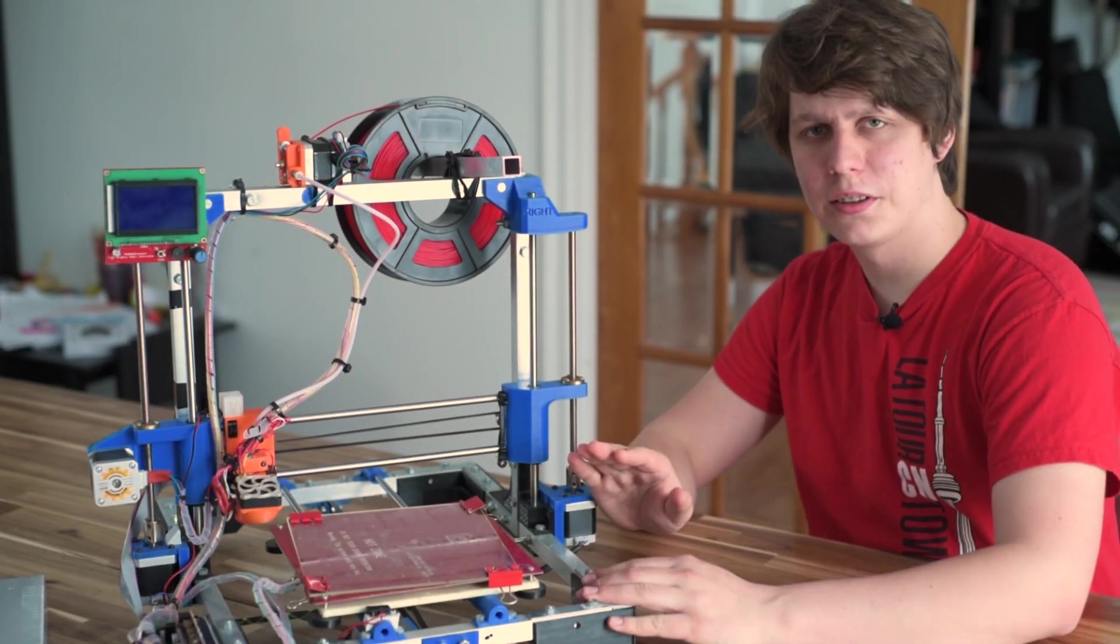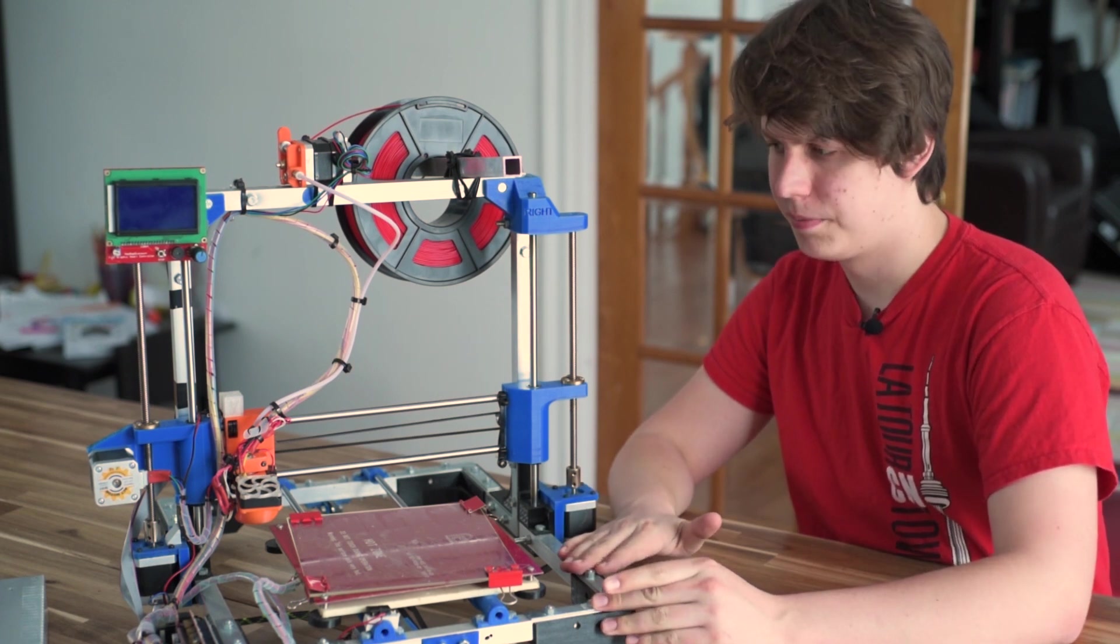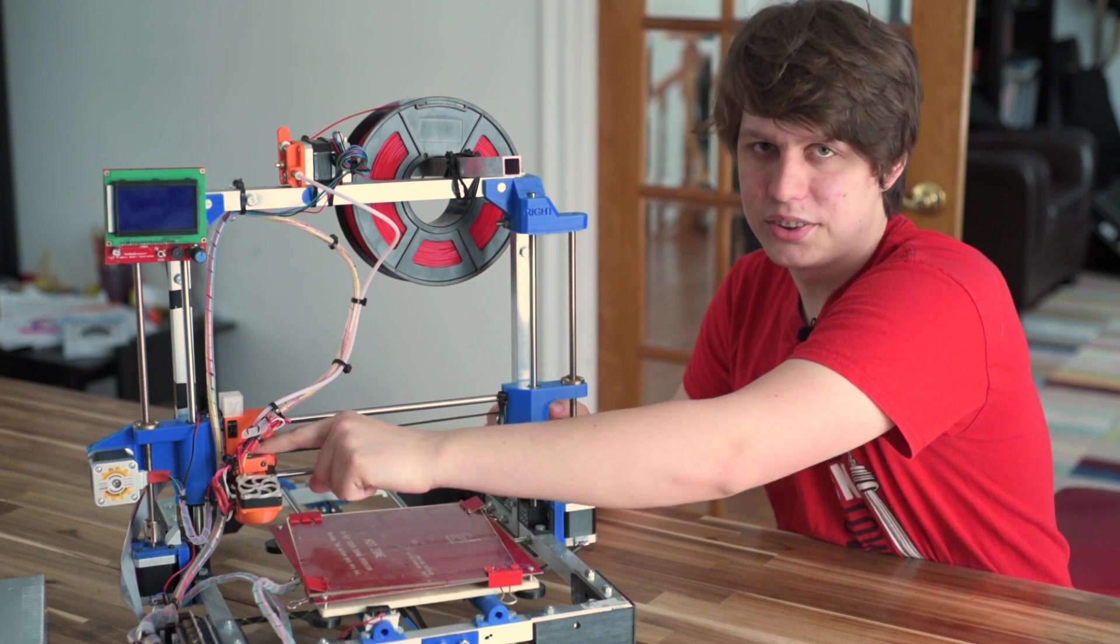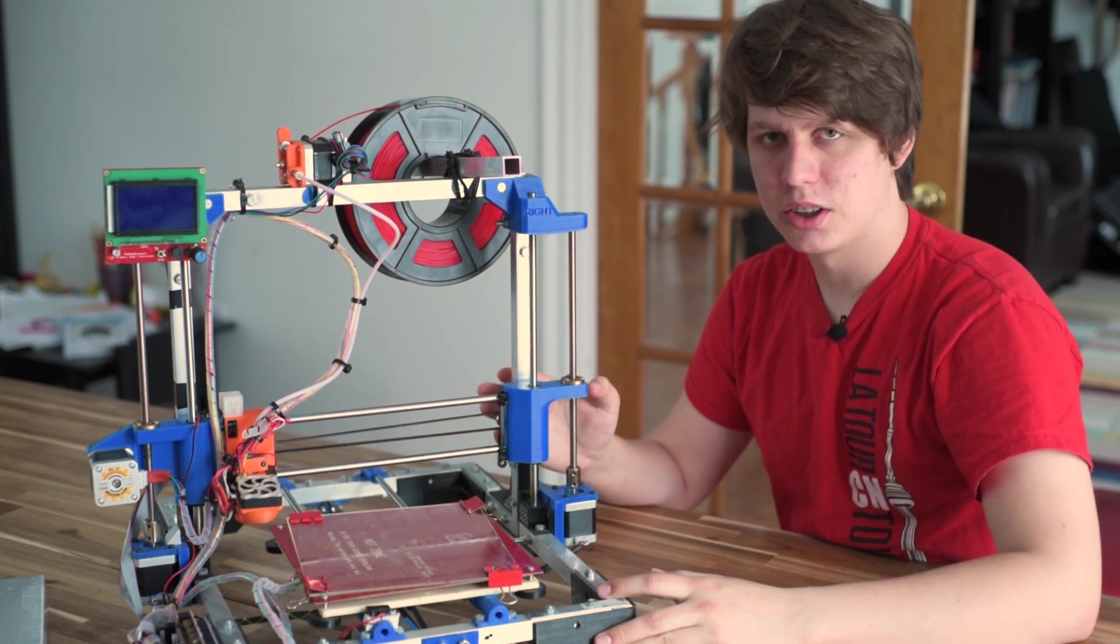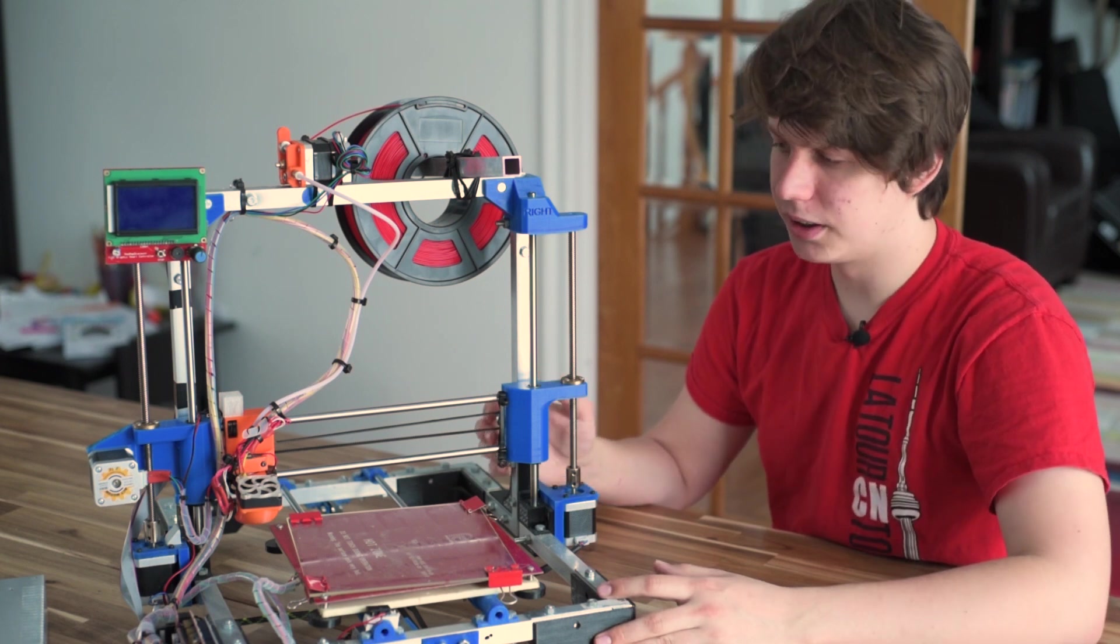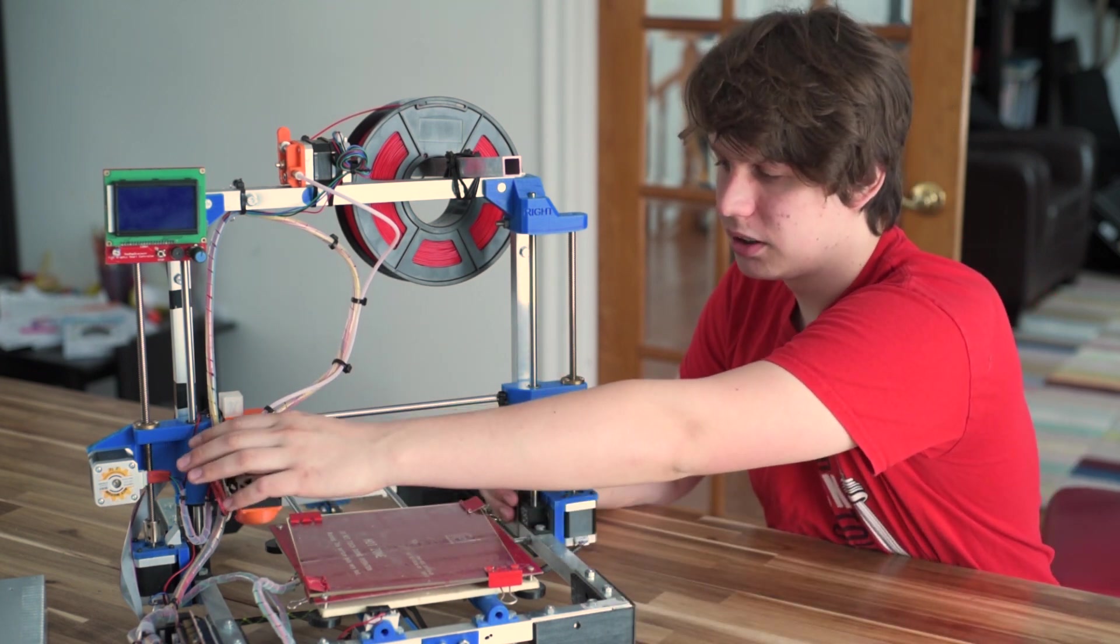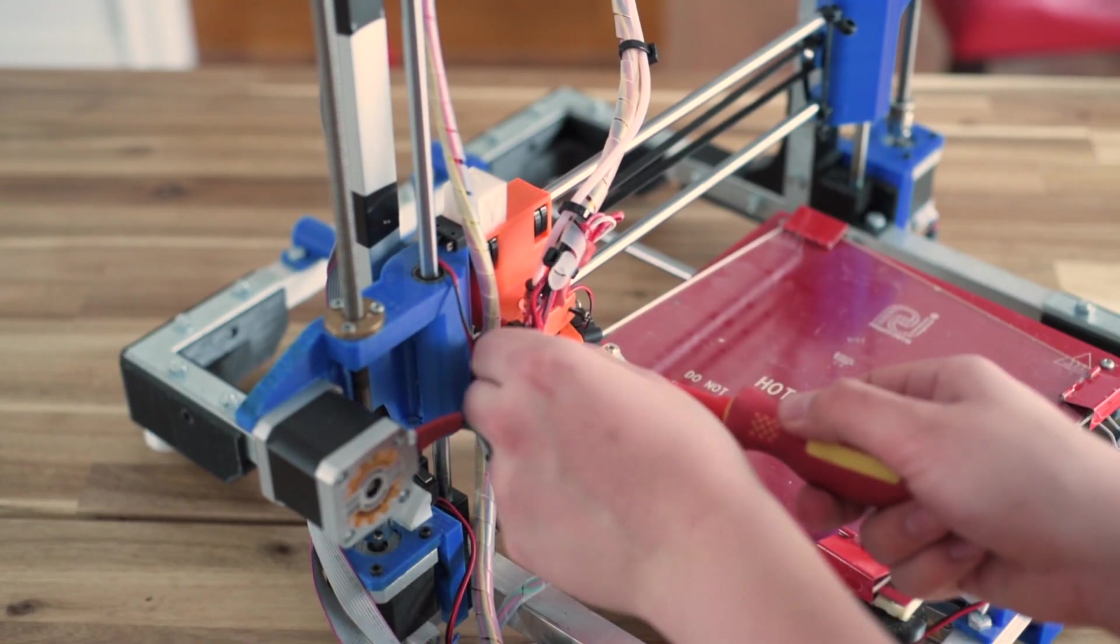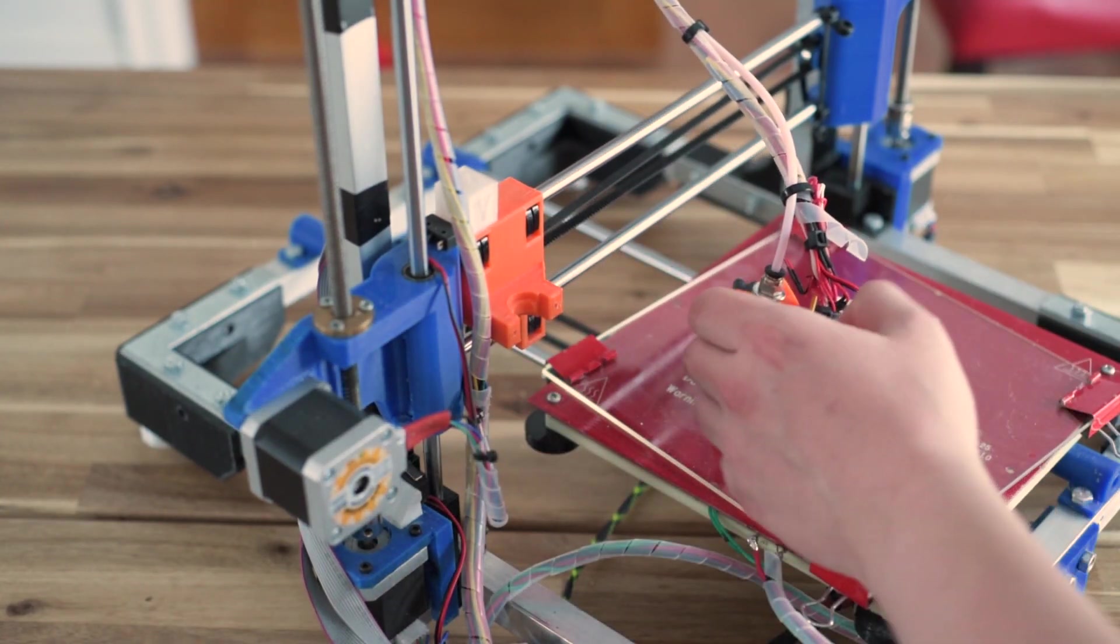So here is my homemade 3D printer. It uses a Bowden drive system, so there's actually less stuff on the print head. So the first step to getting your printer to draw things is actually removing the hot end and all the fans. You just remove these two screws that hold down the heat sink and everything pops off.